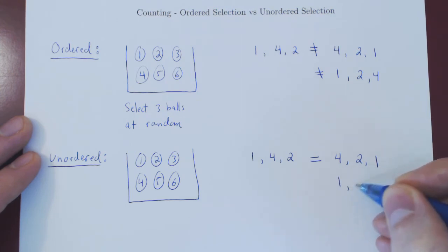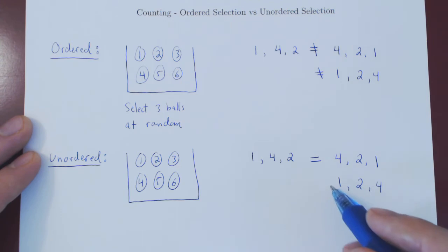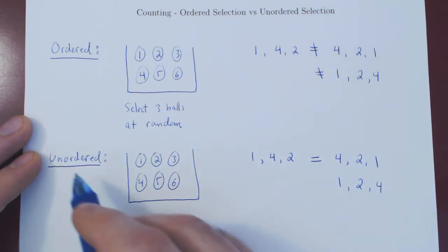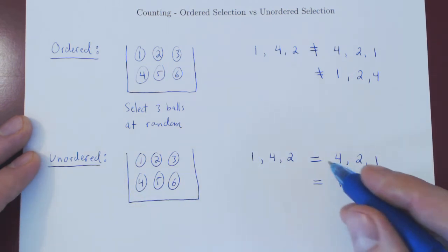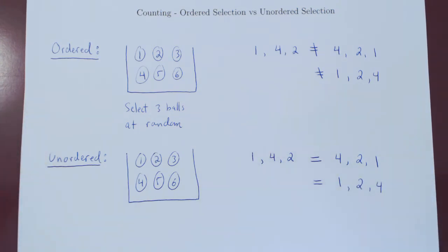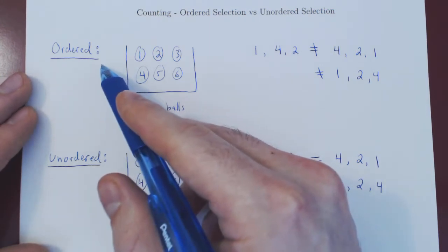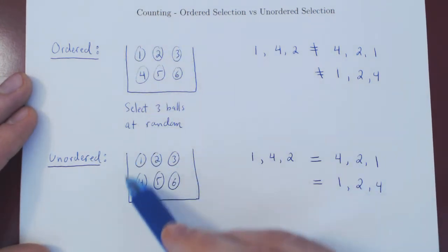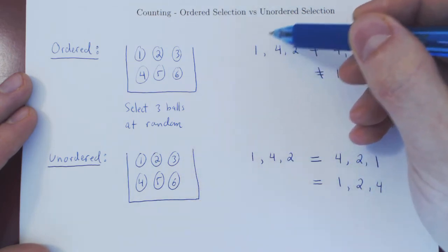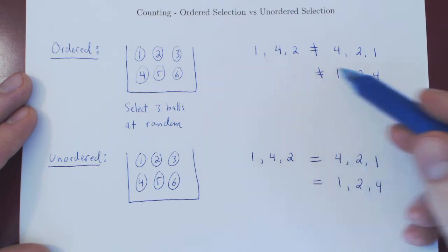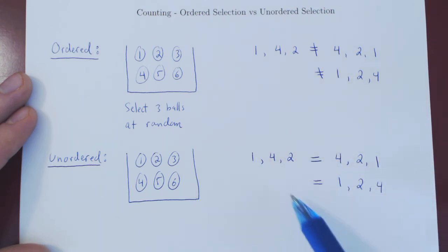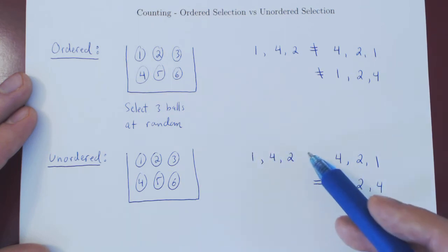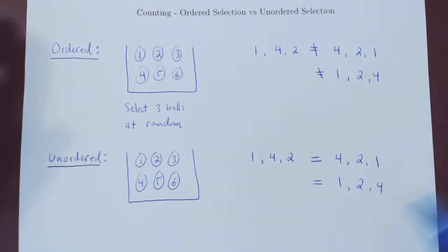Same thing if you draw one first, then two, then four — you're left with balls one, two, four in your hands. As we do not keep track of which came first, second, and third, this selection is also considered to be the same as the others. When you have an ordered selection, the order matters. When it is unordered, you disregard the order in which the elements were selected, and you only look at what elements you have in the end — if they're the same as sets, they're the same selection. That is ordered versus unordered.